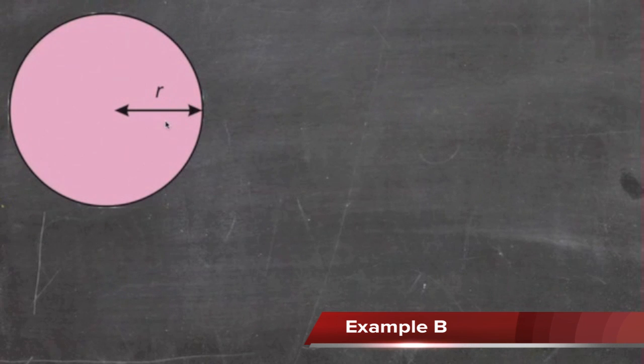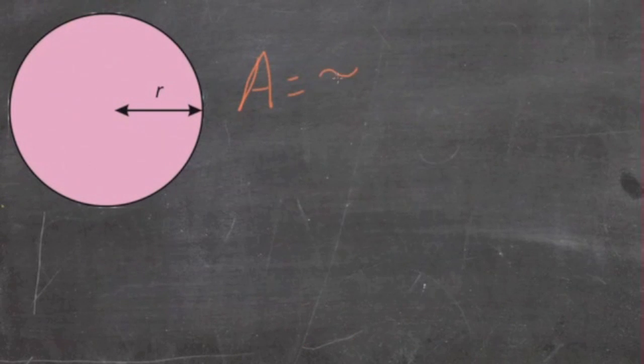The first picture we're looking at here is the radius of a circle, and we're going to use the formula for the area of a circle: Area equals pi r squared. We have A equals pi times whatever the radius is squared.